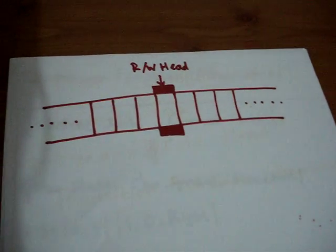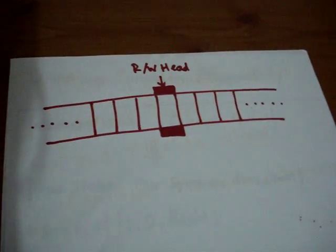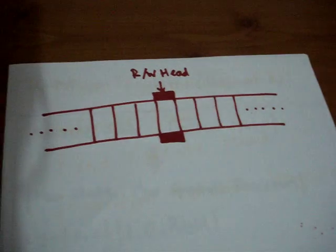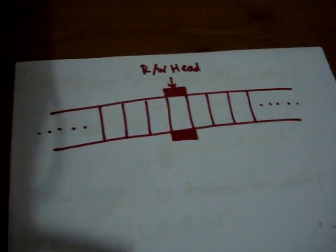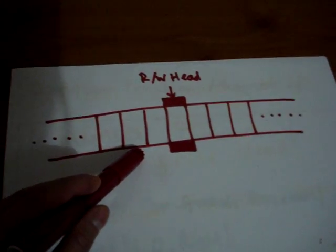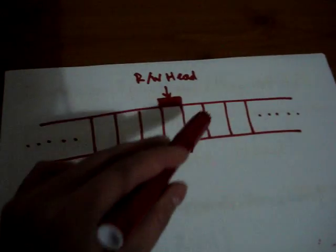Basically, there is an infinite tape and a read and write head that moves along the infinite tape. It can either go one square to the left or to the right or stay in the current position.